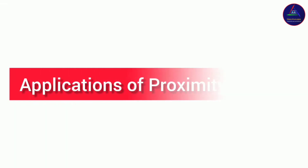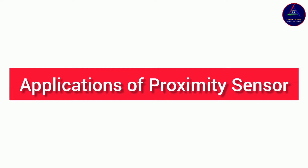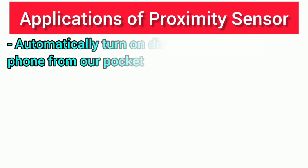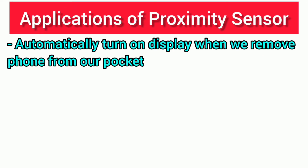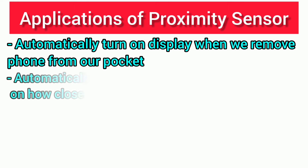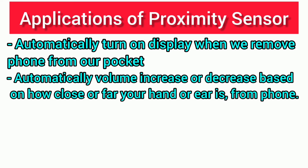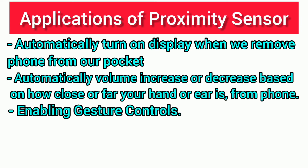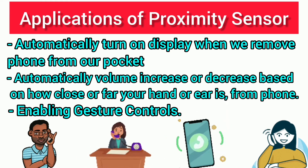Other roles of proximity sensor in mobiles include automatically turning on the display when we remove the phone from our pocket, automatically increasing or decreasing volume based on how close or far our hand or ear is from the phone, and enabling gesture control — for example, waving a hand in front of your phone to wake it up.